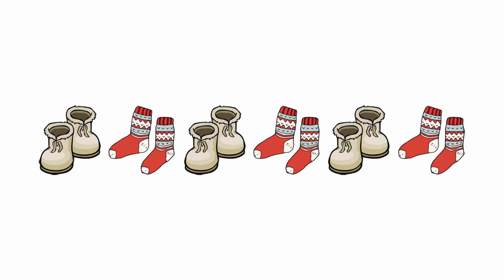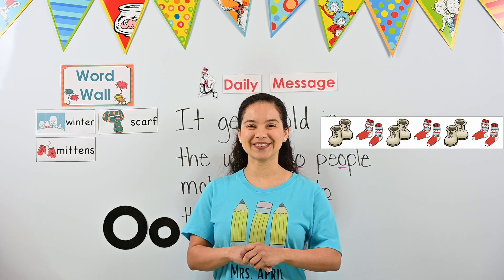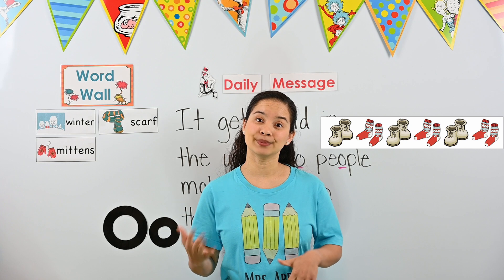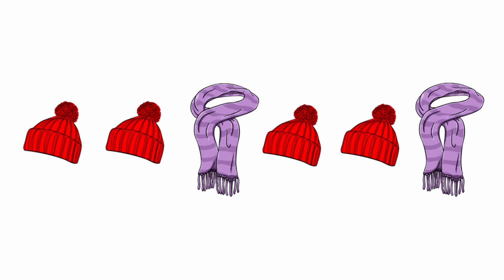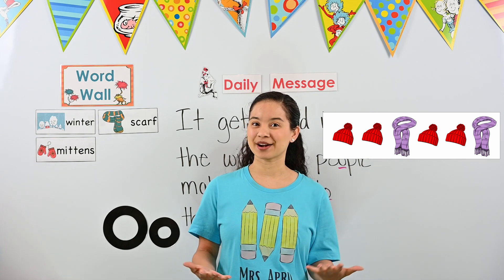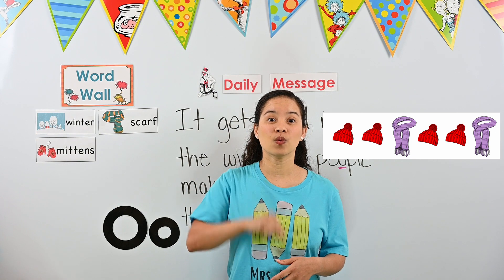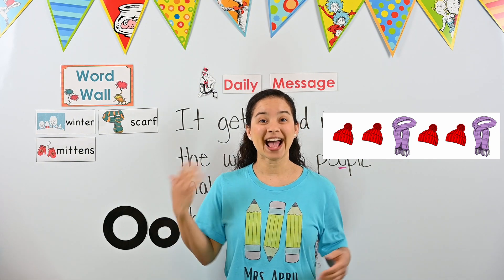What pattern do we have? I see boots and then socks, then boots and socks. That pattern is boots, socks, boots, socks. Let's look at another one. A hat and another hat, and then a scarf — then a hat, a hat, and a scarf. That pattern was a little different: we had two of the same things and then one of something else. We had hat, hat, scarf — hat, hat, scarf.